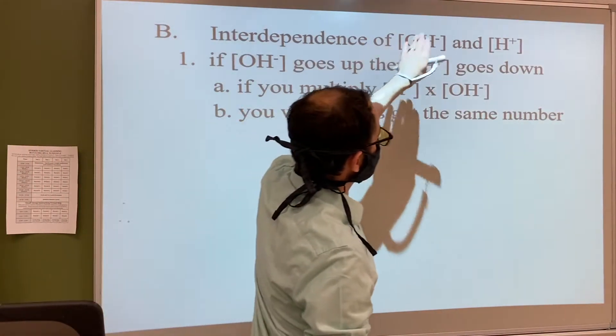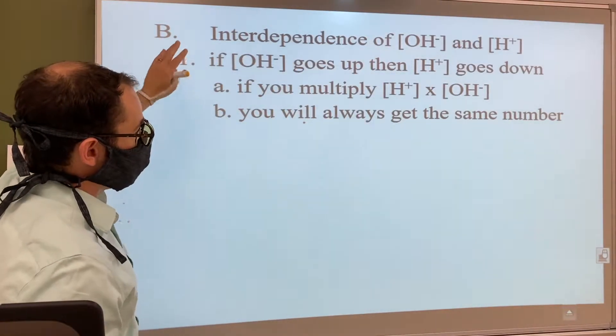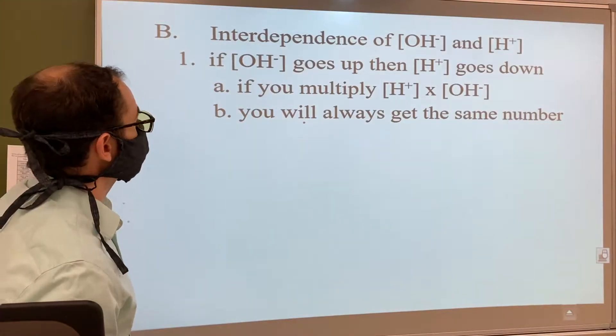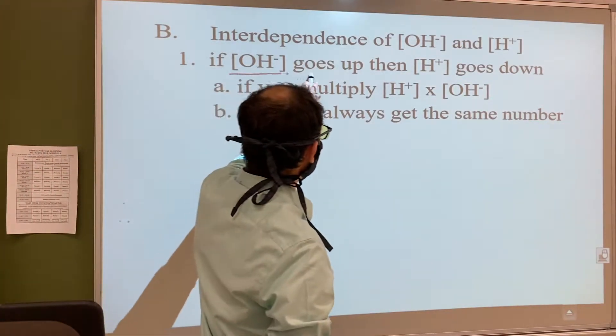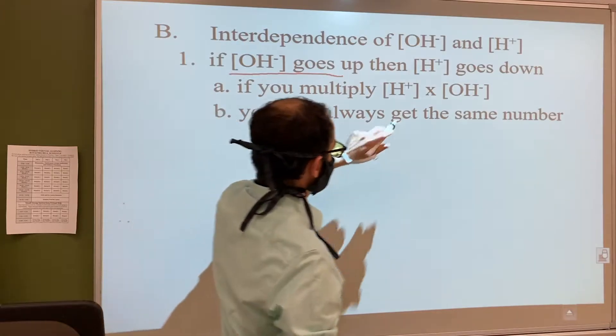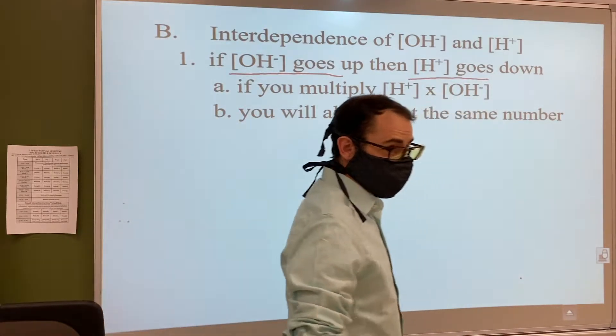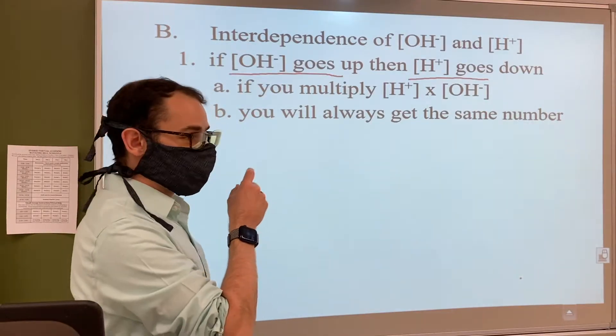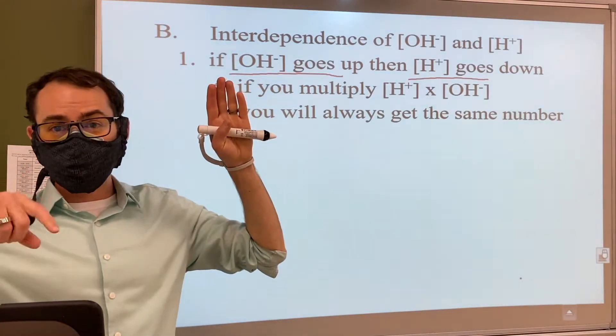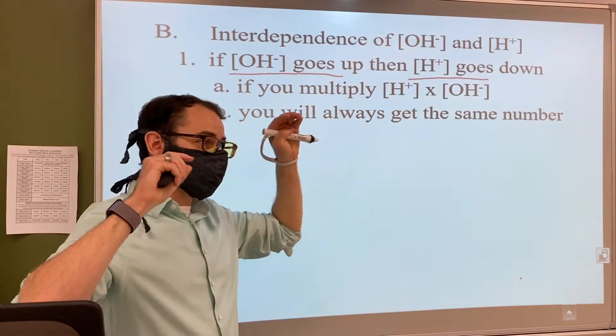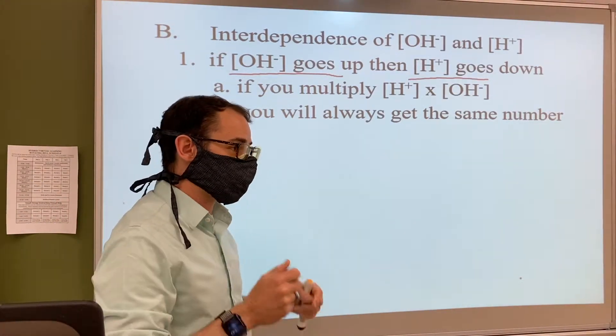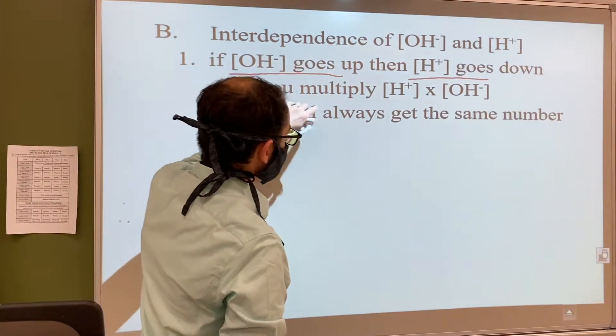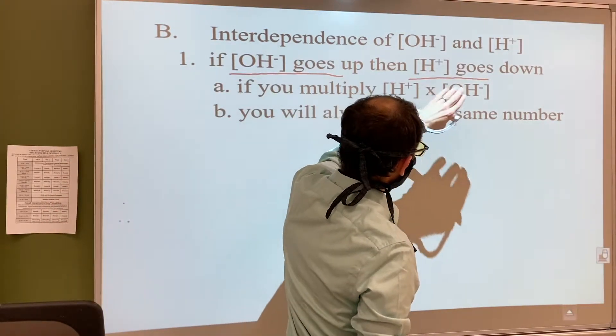There's this interdependence of the OH- concentration and the H+ concentration. If OH- goes up, then H+ goes down. The neat thing about this is whenever you have an inverse relationship like this, no matter what the two numbers are, if you multiply them together you're always going to get the same number. You're always going to get a constant when you multiply [H+] and [OH-].